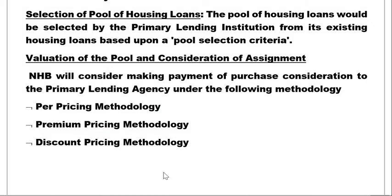The pool of housing loans is selected by the primary lending institution from its existing housing loan portfolio based on pool selection criteria — including valuation and assignment considerations. NHB considers making payment for purchase consideration to the primary lending agency under the following pricing methodologies: par pricing methodology, premium pricing methodology, and discount pricing methodology.